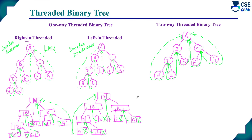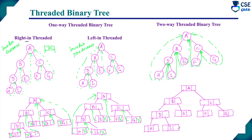The linked list representation of the two-way threaded binary tree is also shown. For H: left connects to root (no predecessor), right connects to in-order successor D. For I: left is in-order predecessor, right is in-order successor B. For E: left is in-order predecessor, right is in-order successor A. For F: left predecessor A, right successor C. For G: left predecessor C, right connects to root (no successor).